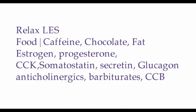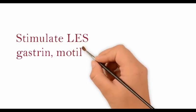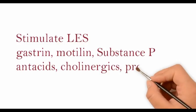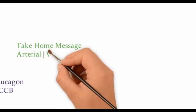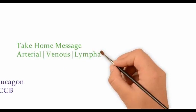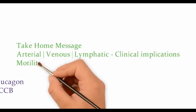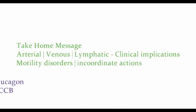The LES is relaxed by foods such as caffeine, chocolate, and fat, and by hormones like estrogen, progesterone, somatostatin, secretin, and glucagon. The LES is stimulated by gastrin, motilin, substance P, antacids, cholinergics, and prokinetics. The take-home message is that the arterial, venous, and lymphatic anatomy have many clinical implications, and motility disorders are caused by incoordinate actions of the pharynx, sphincters, esophagus, and stomach.